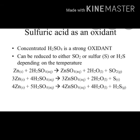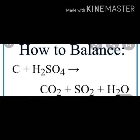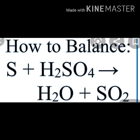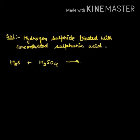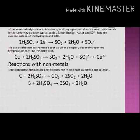If phosphorus reacts with concentrated sulphuric acid, phosphoric acid is formed by oxidation of phosphorus, and concentrated sulphuric acid itself is reduced to sulphur dioxide. That is: 2P + 5H₂SO₄ → 2H₃PO₄ + 5SO₂ + 2H₂O.